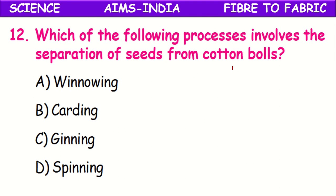Which of the following processes involves the separation of seeds from cotton balls? The process of separation of cotton seeds from cotton balls is called ginning. Ginning is the first step in making fiber into fabric.